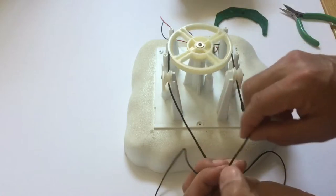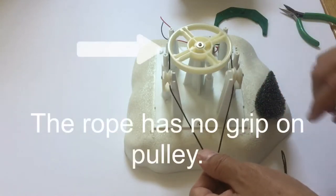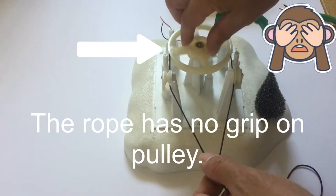Usually people just take the string and wrap it around the pulley. But as you can see, there's no grip.